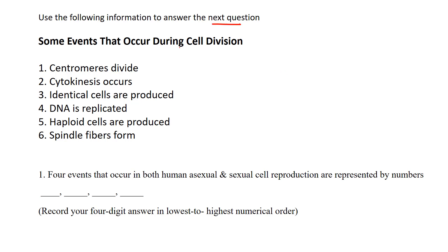It lists some events occurring during cell division, okay? So there's a bunch of different events here and it says four events that occur in both human asexual and human sexual reproduction are represented by the numbers, and they want these numbers as four digits.